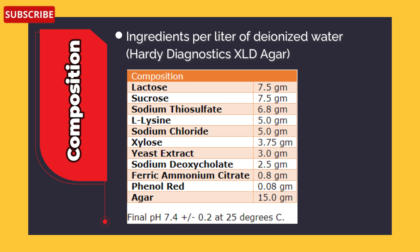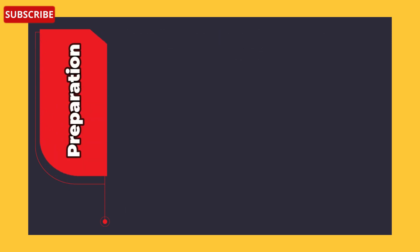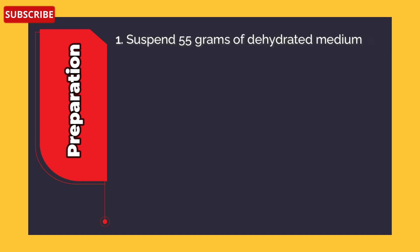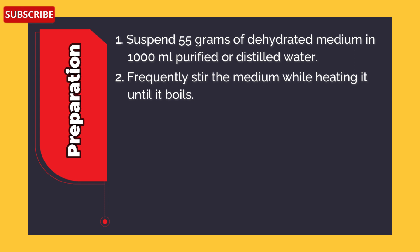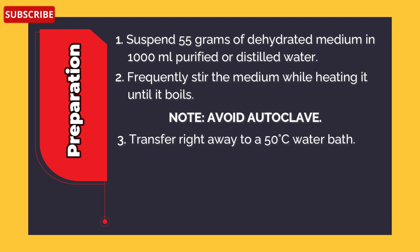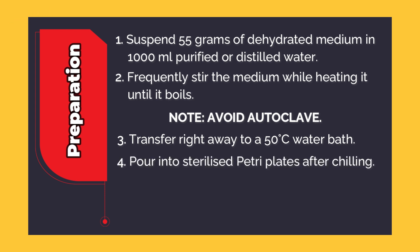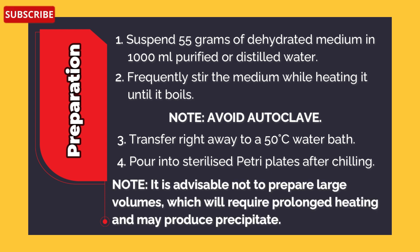This was the recipe for making XLD agar on your own; normally you will have it in a powder form already made. For preparation: first, suspend 55 grams of dehydrated medium in 1000 ml of purified or distilled water. Stir the medium frequently while heating until it boils. Note: avoid autoclaving. Transfer right away to a 50°C water bath, then pour into sterilized petri plates after chilling. It is advisable not to prepare large volumes, which require prolonged heating and may produce precipitation.